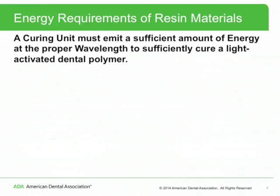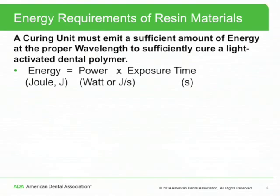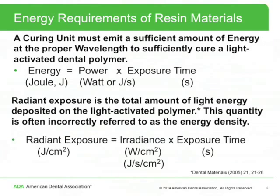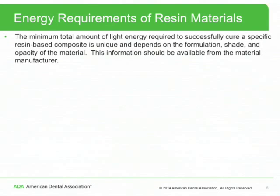What is the proper wavelength will be discussed later. Energy expressed in joules is equal to power times exposure time. Radiant exposure is the total amount of light energy deposited on the light-activated polymer — though this quantity is often incorrectly referred to as energy density. Radiant exposure is expressed in joules per square centimeter and is equal to irradiance times exposure time. The minimum total amount of light energy required to successfully cure a specific resin-based composite is unique and depends on the formulation, shade, and opacity of the material.